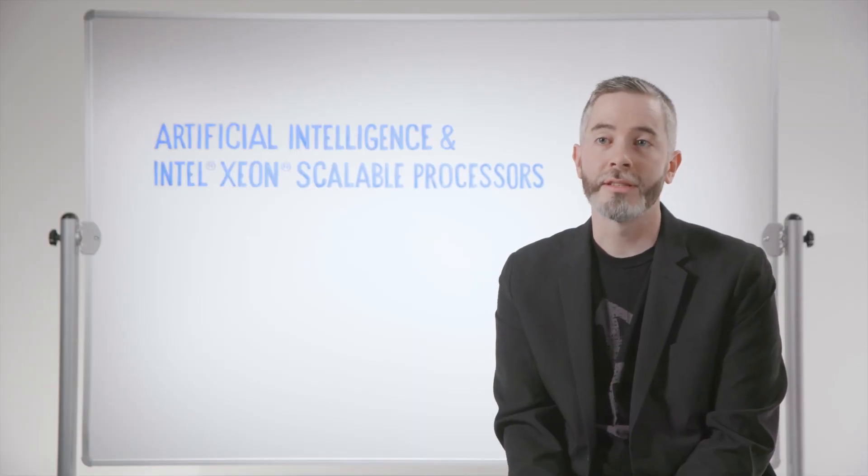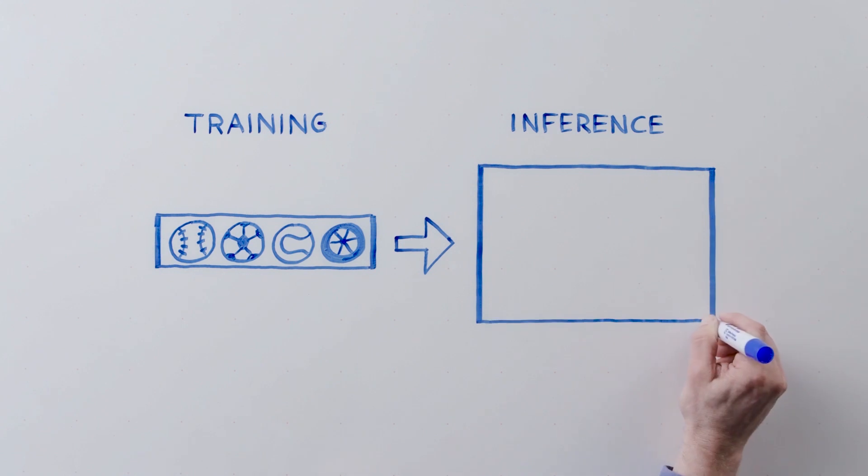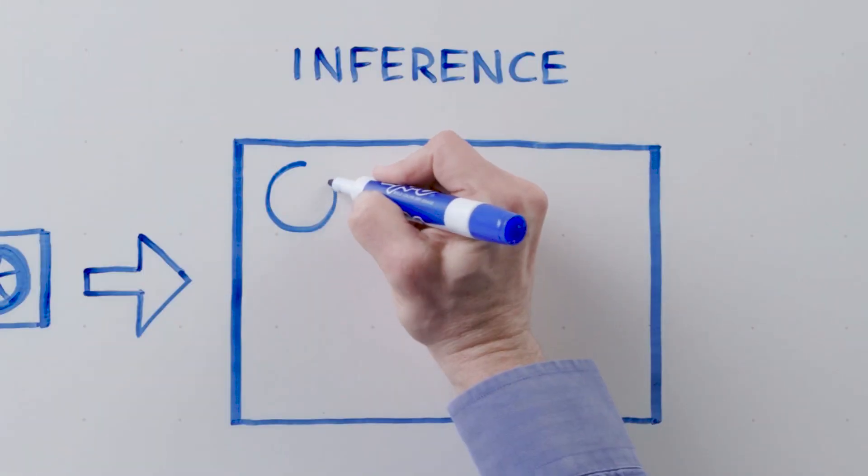The second part is inference, where you're taking the model that you just trained and you're using it to infer something new about data you've never seen before. For example, if you're looking at a series of images.